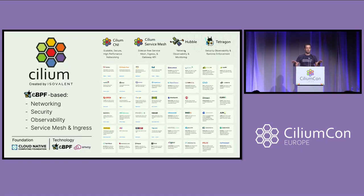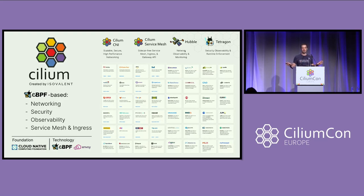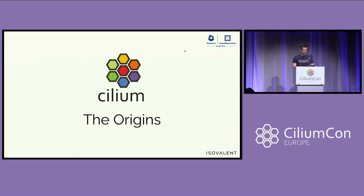I'll keep this super brief because you will hear a lot of end-user talks today about Cilium. But for those who have never heard about Cilium — maybe this is the first time you've seen it — Cilium is eBPF-based networking, security, and observability, widely deployed today, and we're a CNCF project. But this talk is really about the origins of Cilium: where did it get started and why did we create it?